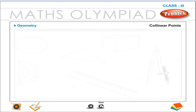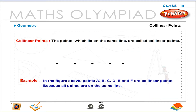Collinear points. The points which lie on the same line are called collinear points. Example: in the figure above, points A, B, C, D, E and F are collinear points because all the points are on the same line.